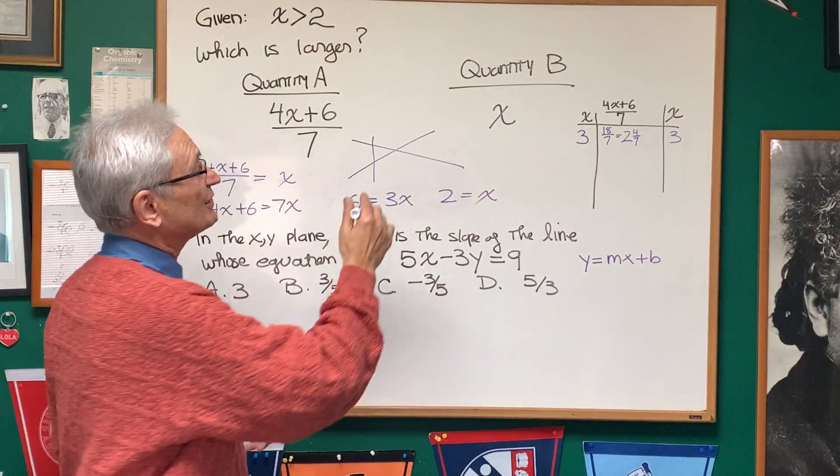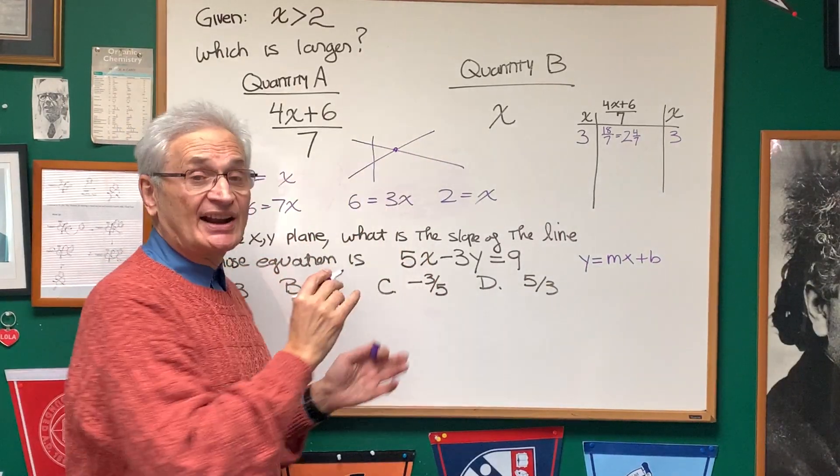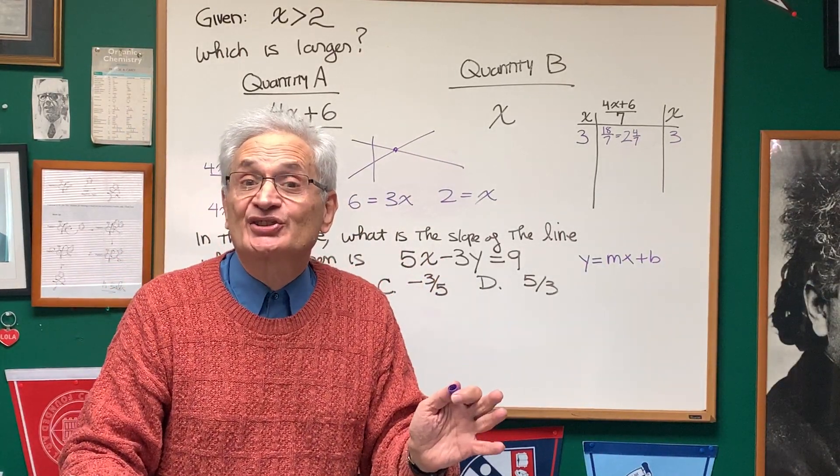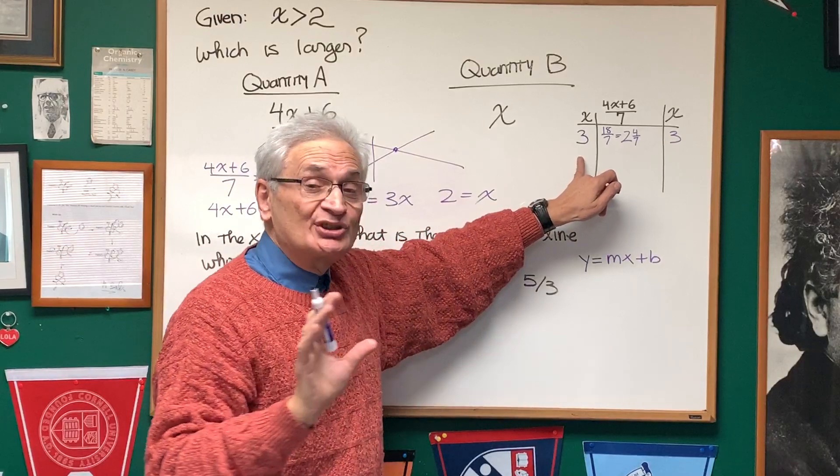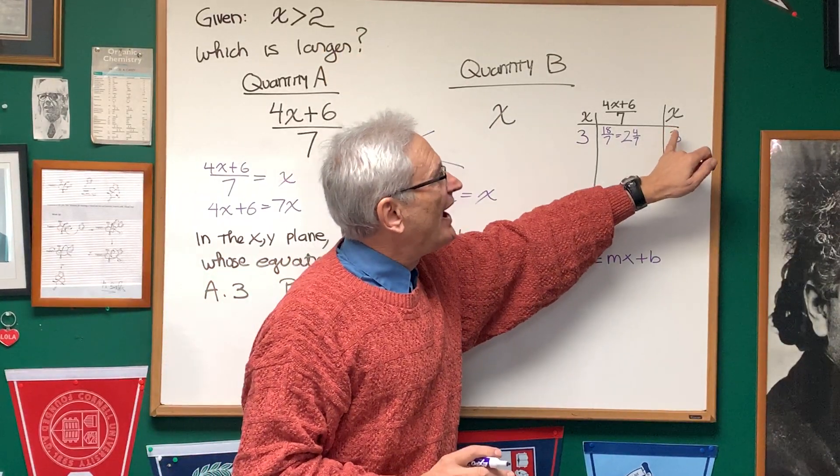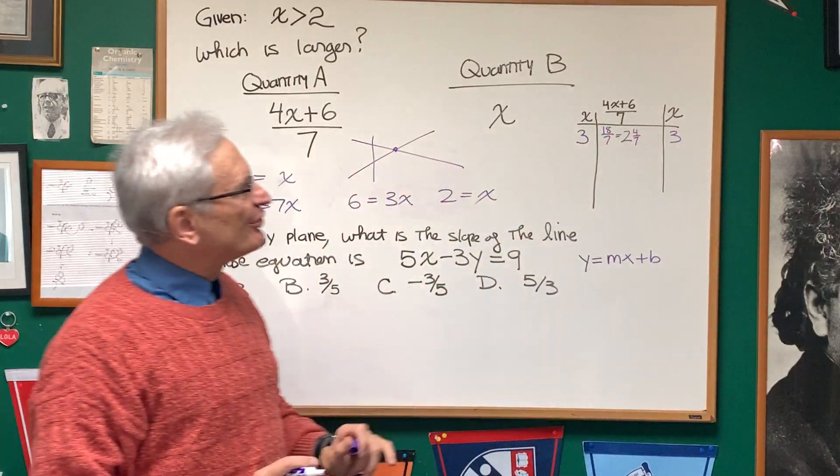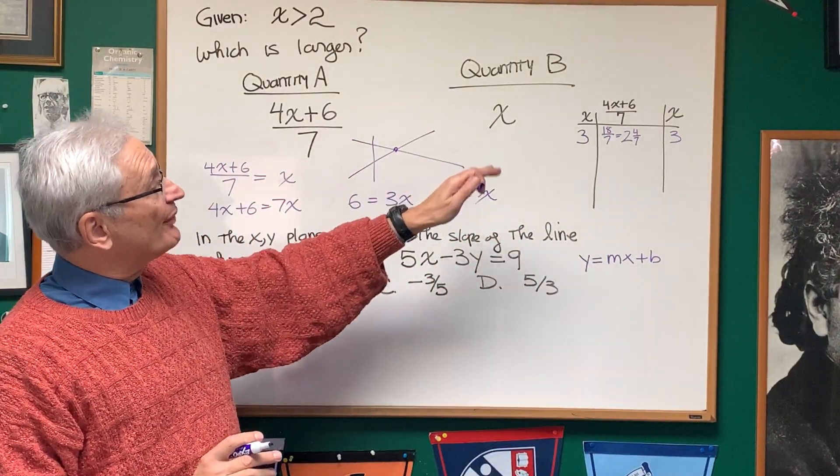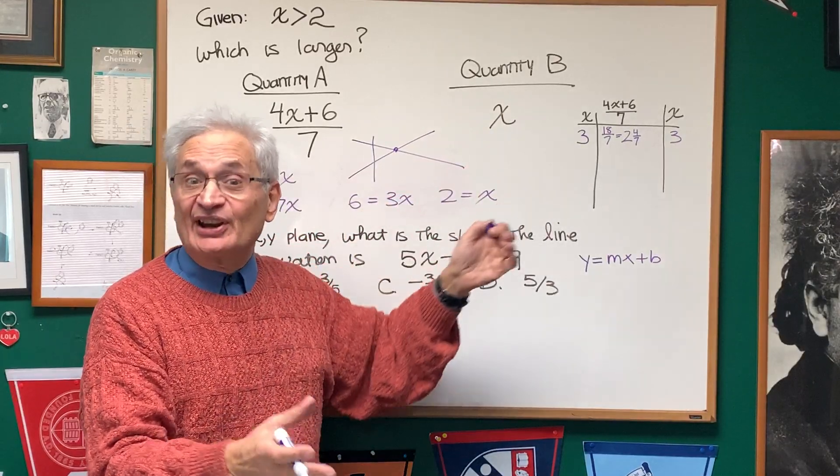Well, what does that tell us? In our visual interpretation, it tells us that at x equals 2, that's the intersection point, and we're absolutely sure then that all values that are greater than 2, x is going to be greater than the expression 4x plus 6 over 7. Therefore, the answer is B. Quantity B is categorically larger.